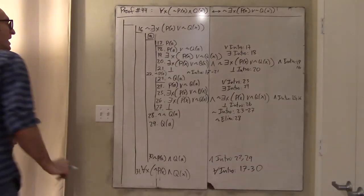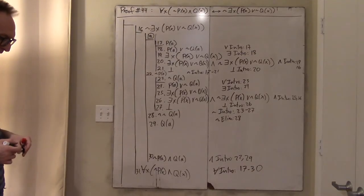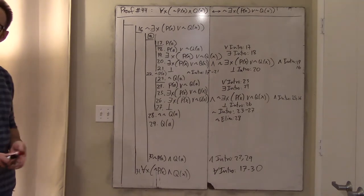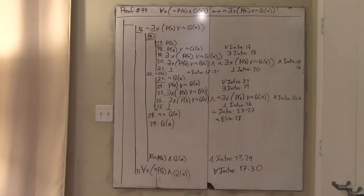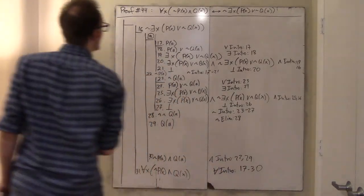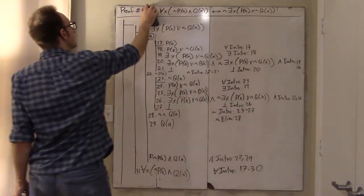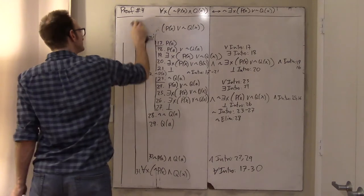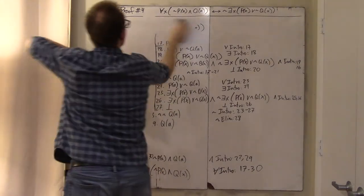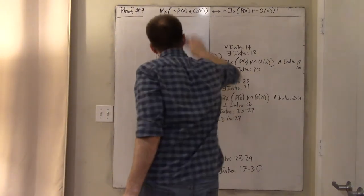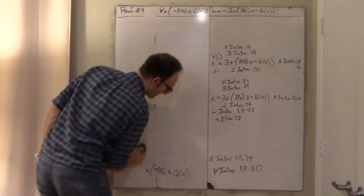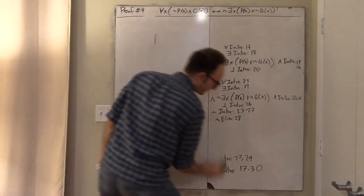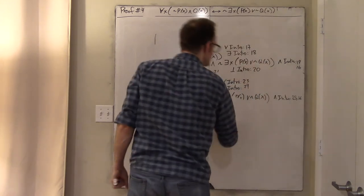That was maybe a little boring. This is just really a straight rehash of things we did already. Let's do proof 45. Proof 45 is really hard — it's as hard as it gets. I think by far the hardest proof we've done so far in this whole class, and it's basically the hardest proof we're going to do.